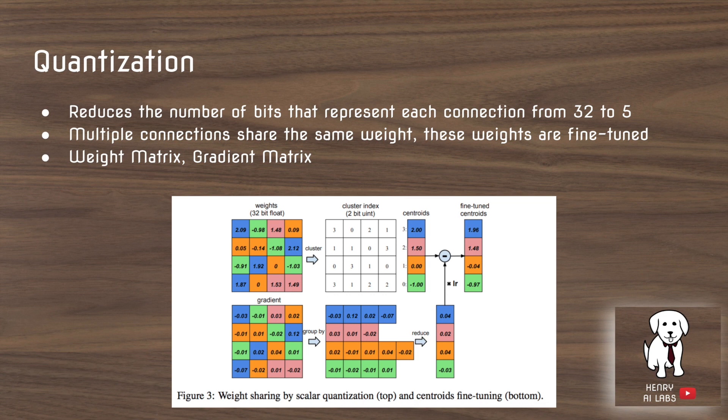After pruning, they quantize the weights and this is the most interesting idea to me. Quantization is this idea of weight sharing and it can really speed up training and storage requirements. They would use a k-means algorithm to cluster the weights into similar groups.